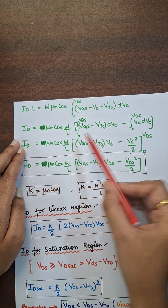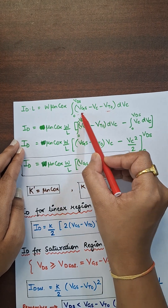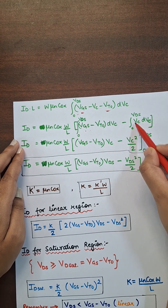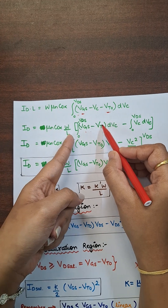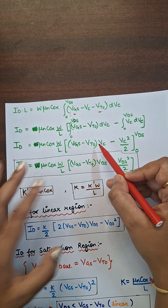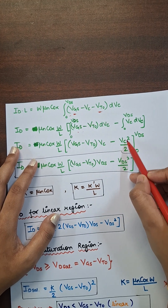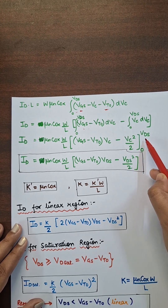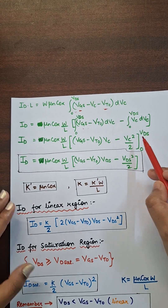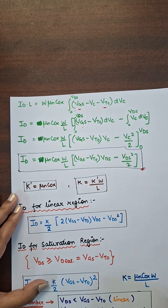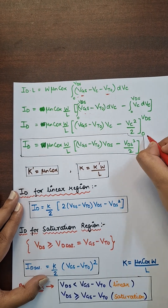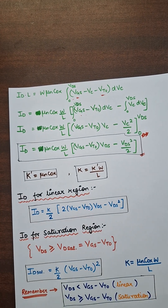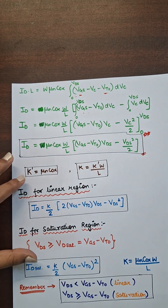Solving the integration, ID equals μn·Cox·(W/L) — which is our constant term — multiplied by the integral of (VGS minus VTO minus VC) dVC from 0 to VDS. Evaluating the limits gives VC and VC²/2 terms evaluated from 0 to VDS, yielding the final formula for ID. This formula is very important for numerical problems.